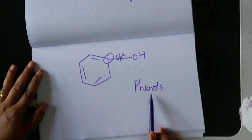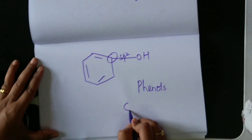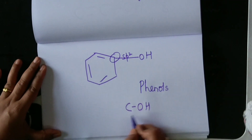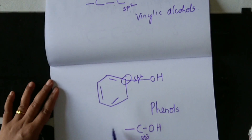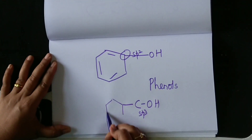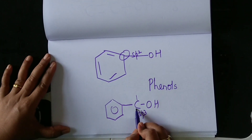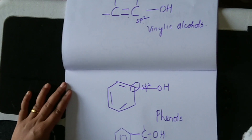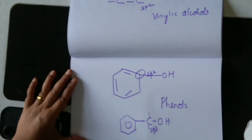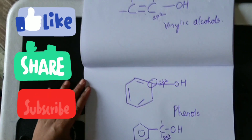How are phenols different from benzylic alcohols? In benzylic alcohols, OH is attached to an SP3 carbon atom which is next to a benzene ring. I hope all of you have understood the classification of alcohols. In the next video, we will be seeing the nomenclature of alcohols. Thank you.